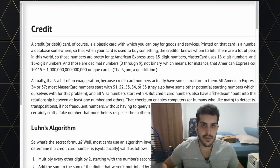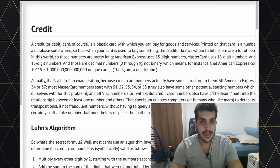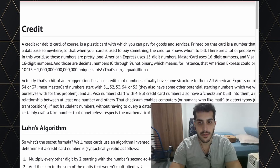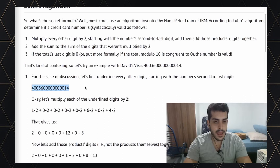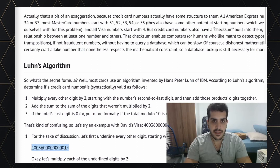Hello everyone, so today we're going to do credit. We've done it in C, now we'll see how much easier it is to do in Python. If you guys don't remember how credit works, we basically get a credit card number like 4003 and we need to check if it's a valid credit card number, and then check which flag the credit card number is — Visa, Mastercard, and so on.